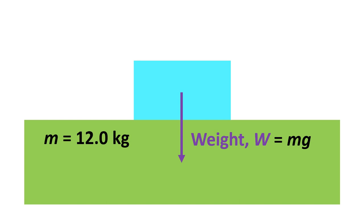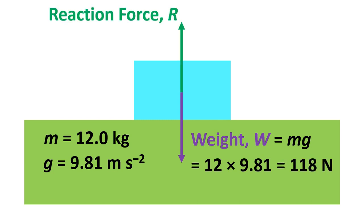So first of all we've got a block on a surface and we can work out the weight of that block using m times g. m was given as 12 kilograms in the question and g was given as 9.81 meters per second squared. Multiplying those together we get 118 newtons. Now there's also a reaction force from the ground pushing back up on the object and that has the same magnitude as the weight so it's also 118 newtons.